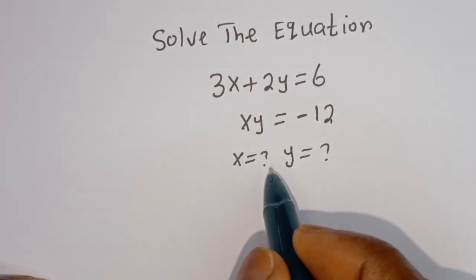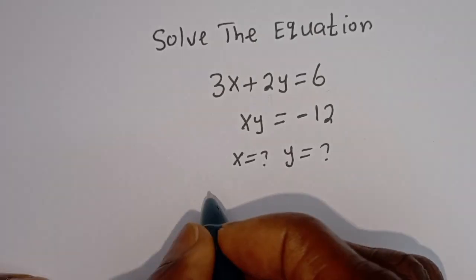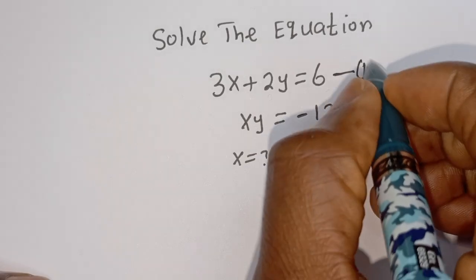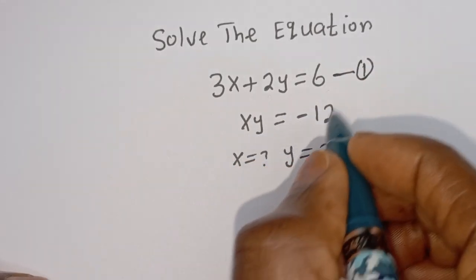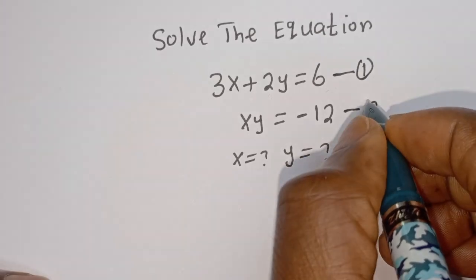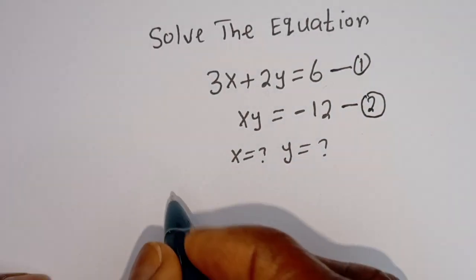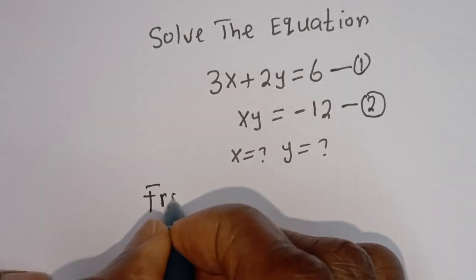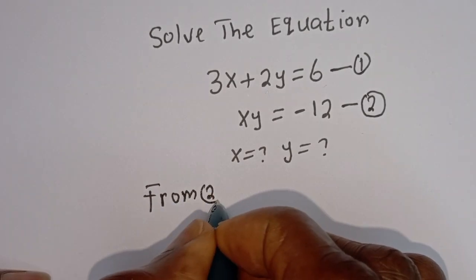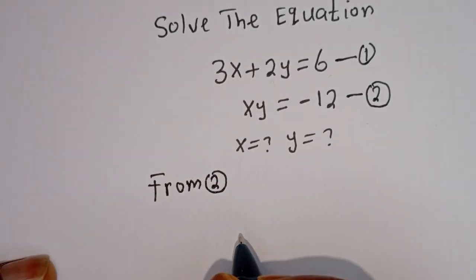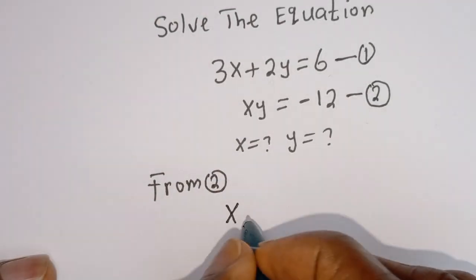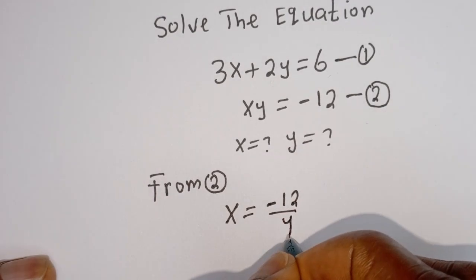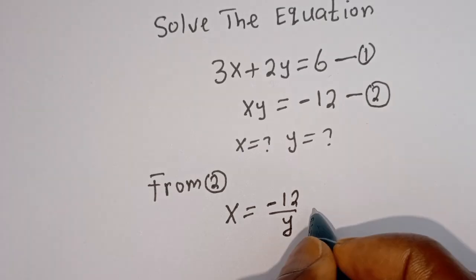From here, we want to find the value of x and y. We have 3x plus 2y is equal to 6 — let's call this equation 1. And xy is equal to minus 12 — let's call this equation 2. From equation 2, x is equal to minus 12 divided by y. Let's call this equation 3.